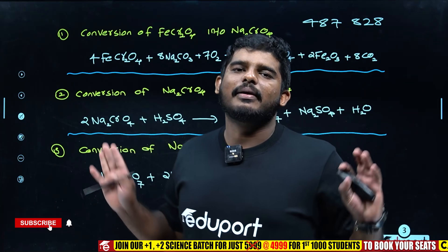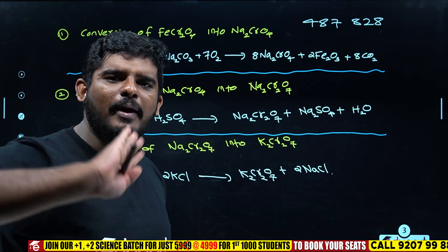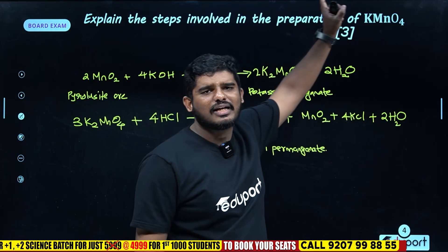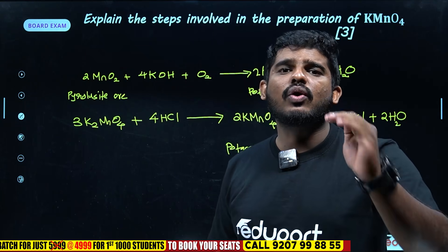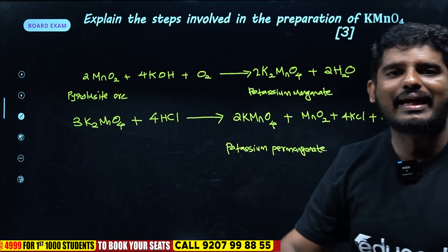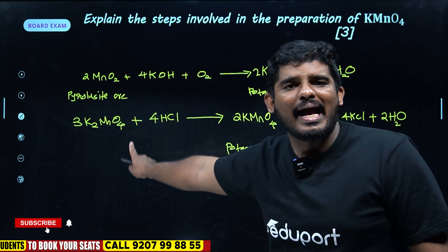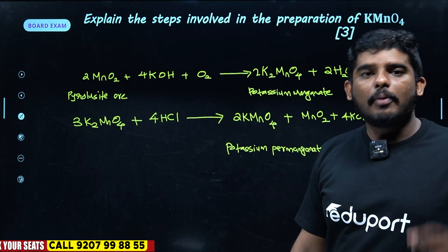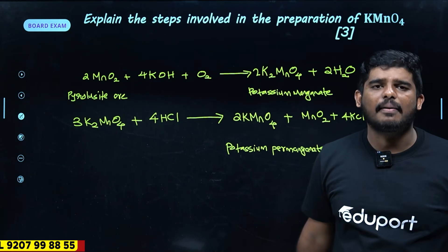This is our step. If you want to learn about this, you can learn about 3 questions. One more question is to explain the steps for potassium permanganate preparation. In the first step, the raw material is pyrolusite (MnO2). Manganese dioxide reacts with KOH to form potassium manganate, and then potassium chloride is also involved.